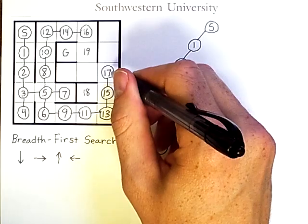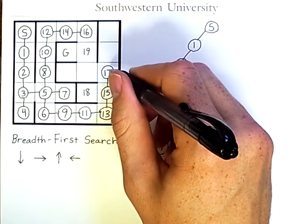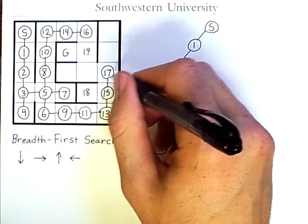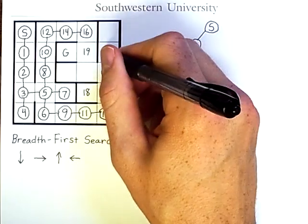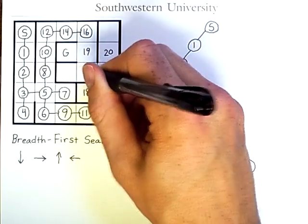And its successors, in order: I've already visited down, can't go right, up will be twentieth, and left will be the twenty-first.